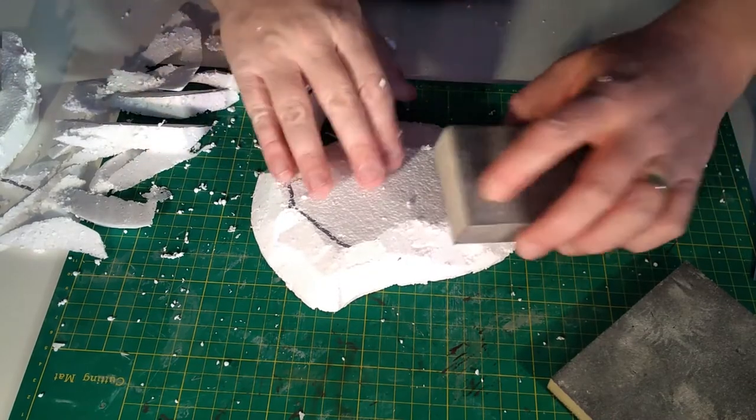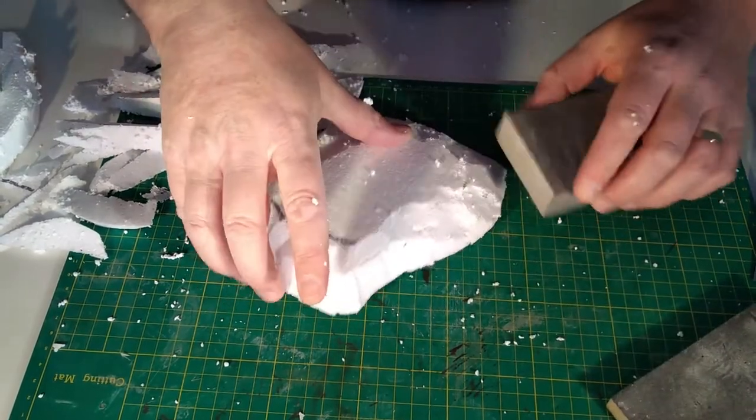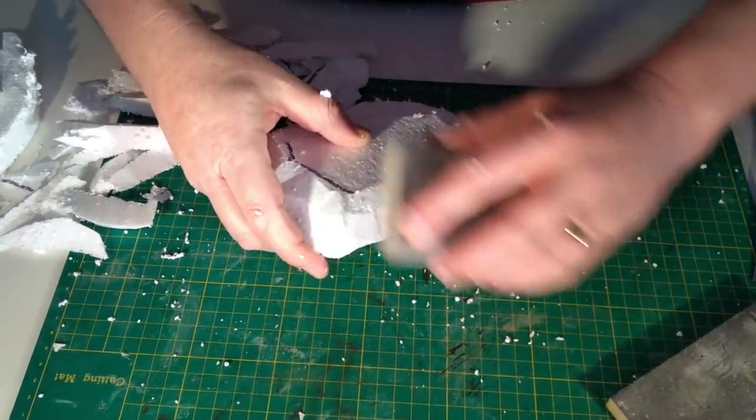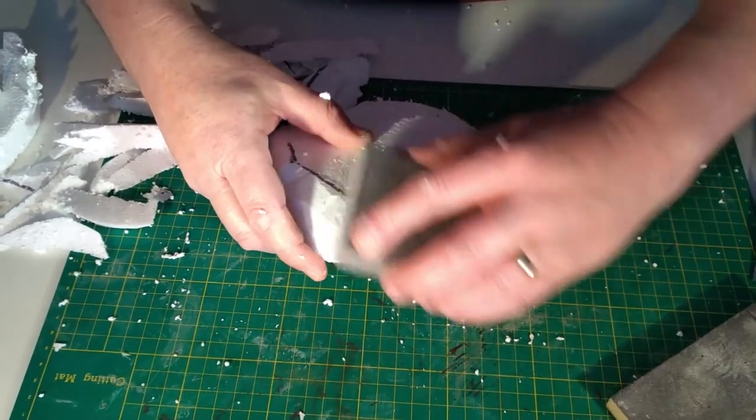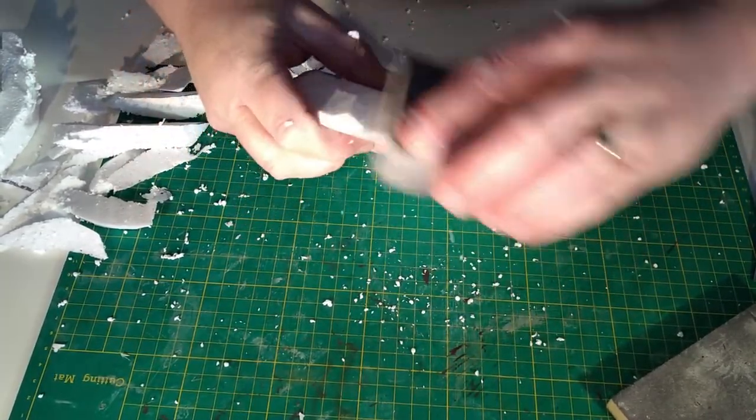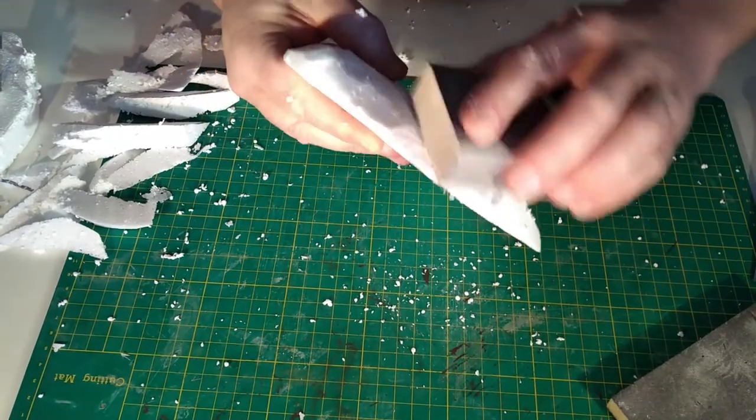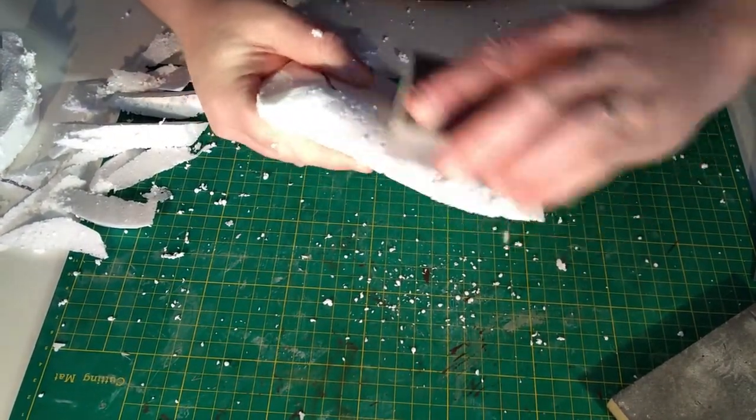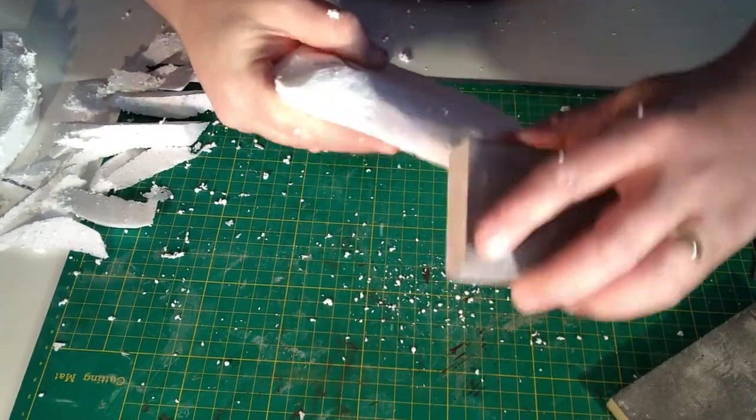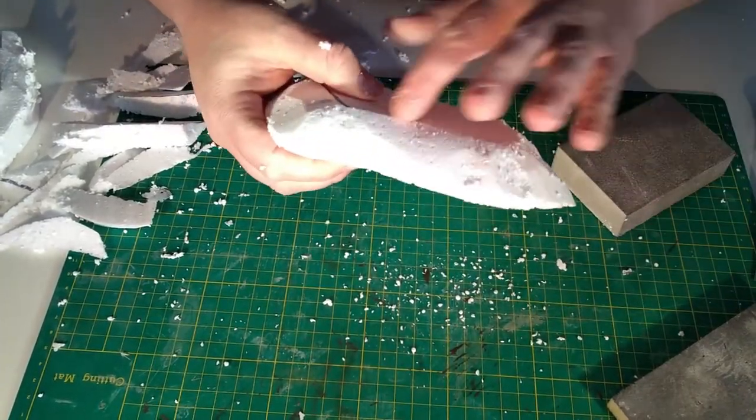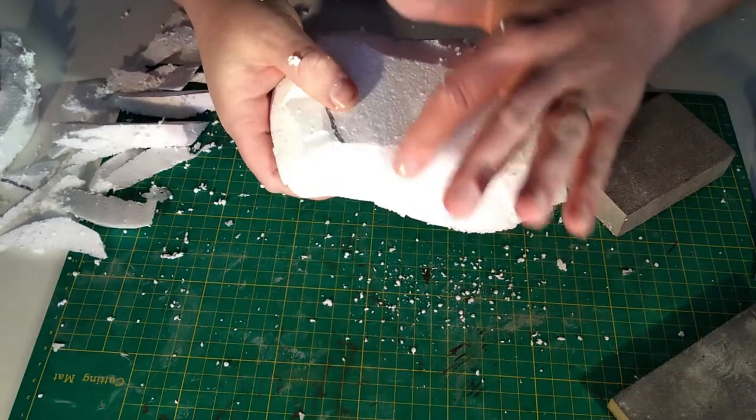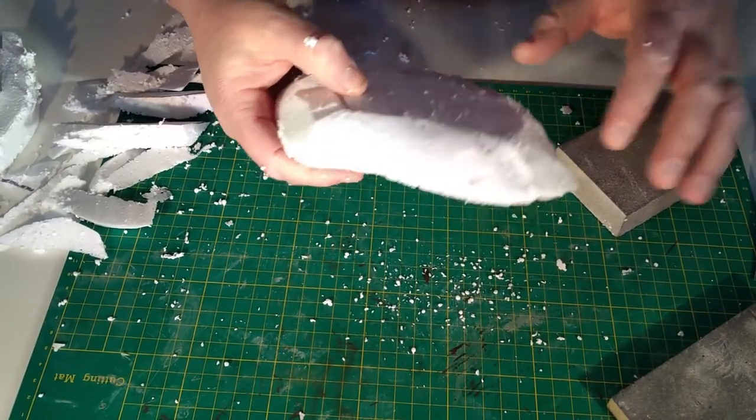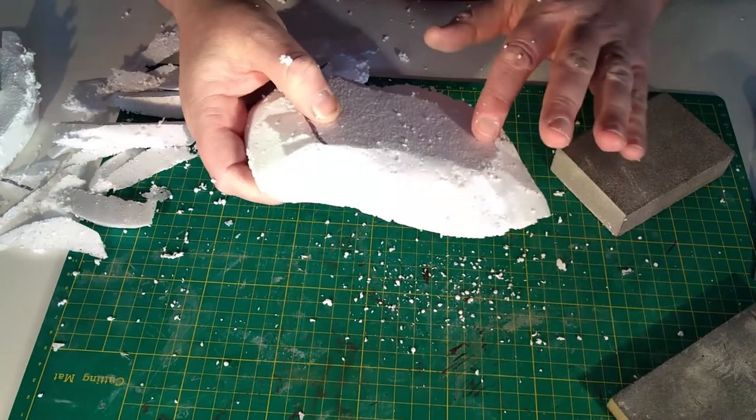Polystyrene sands very well but is incredibly messy, so I would really recommend doing this in an area where you can easily clean up, or even better, do it outdoors. As you can see, I've created quite a smooth texture. Sanding polystyrene isn't exactly exciting to watch, so I'll be back with you in a moment.